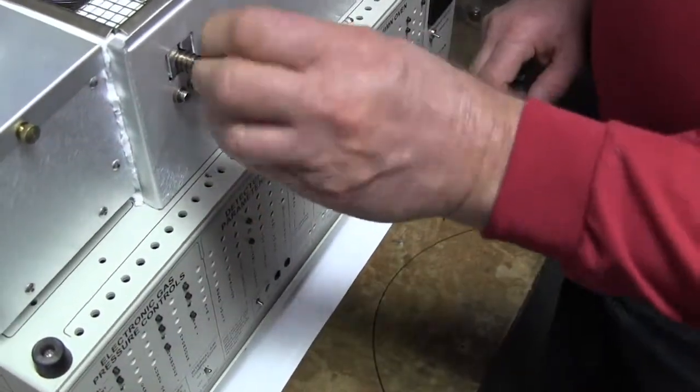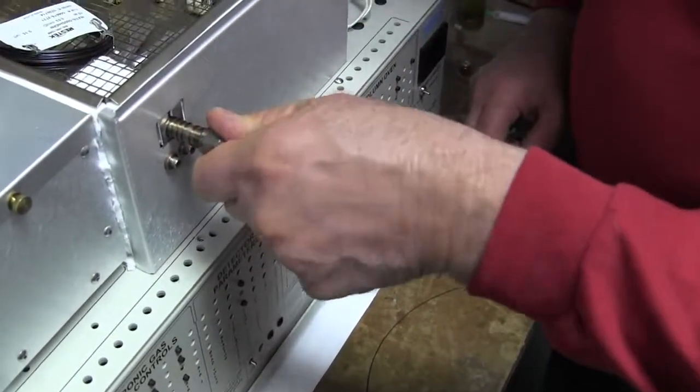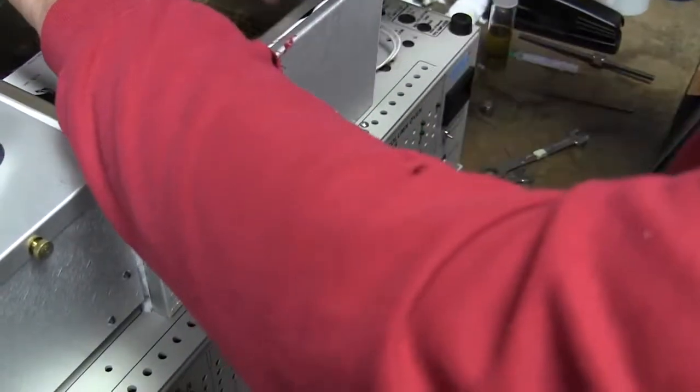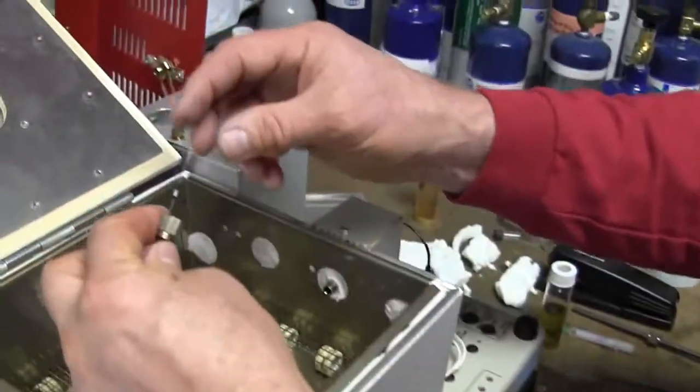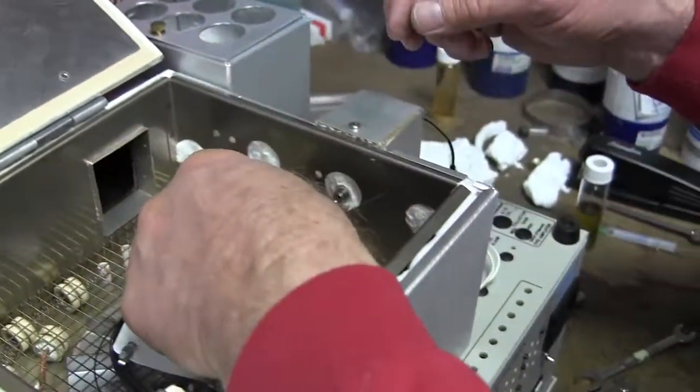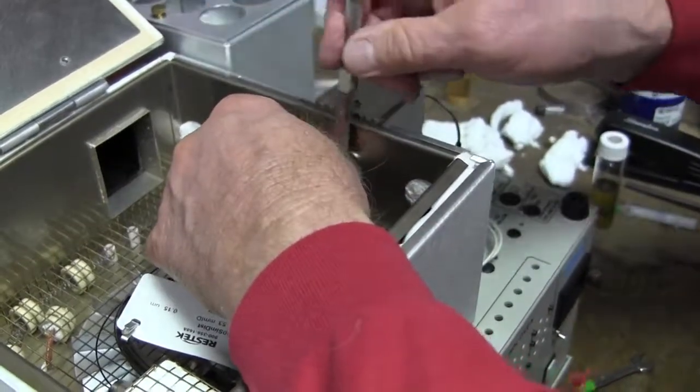Now to put the column back in the FID detector, ensure that the column is sticking out about an inch from the ferrule and then reinsert and tighten the nut. That's all there is to it.